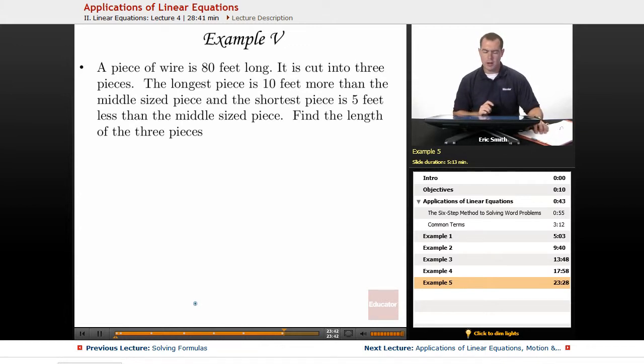So this one says we have a piece of wire and it is 80 feet long. We're going to cut this into three different pieces, with the longest piece being 10 feet more than the middle sized piece, and the short piece being 5 feet less than the middle sized piece. Find the length of the three pieces.